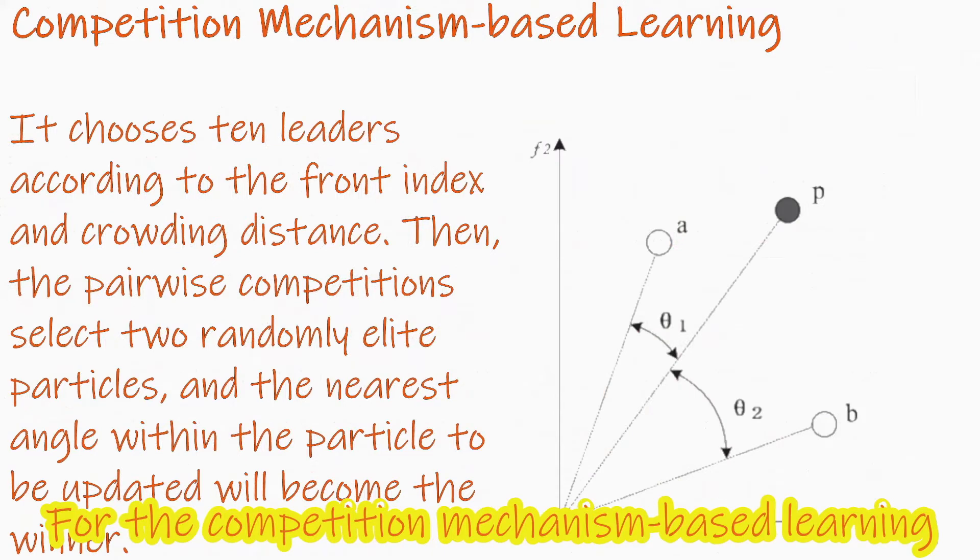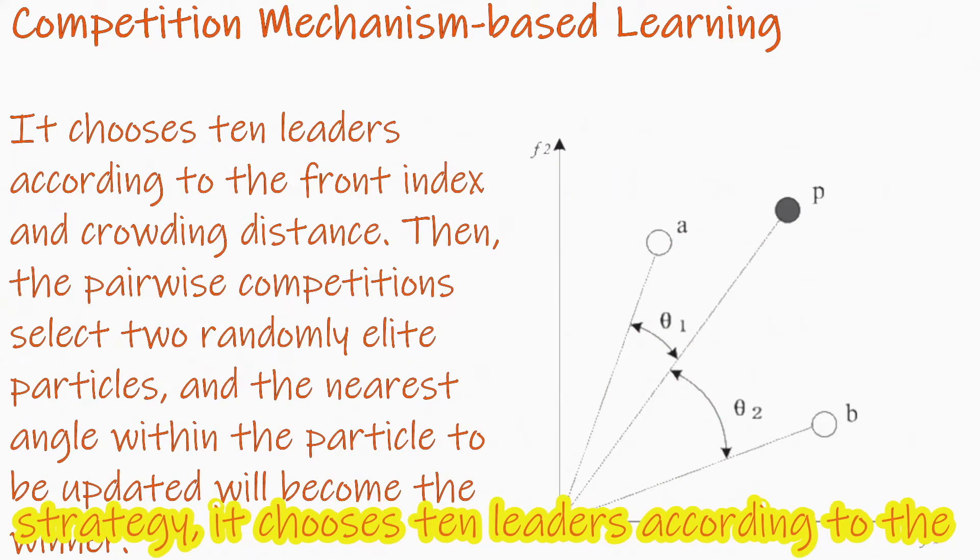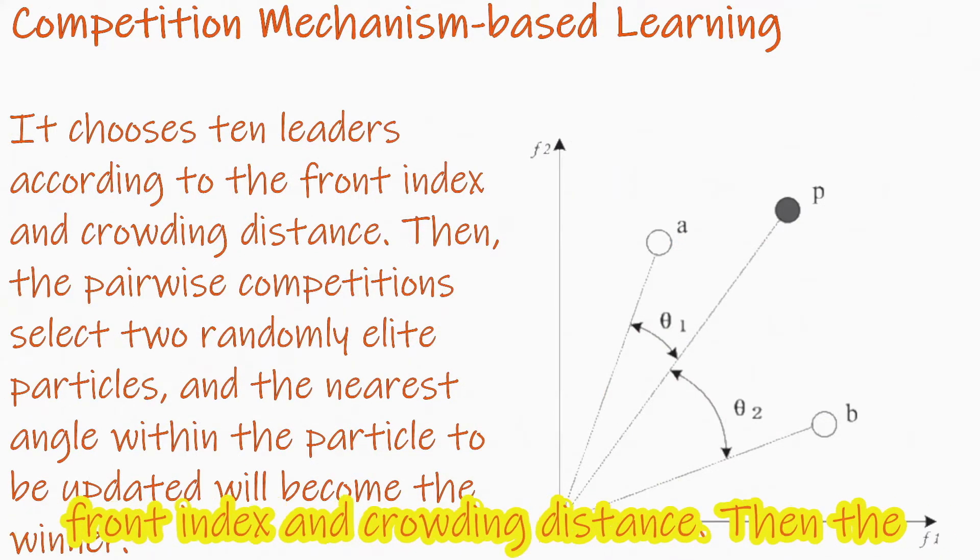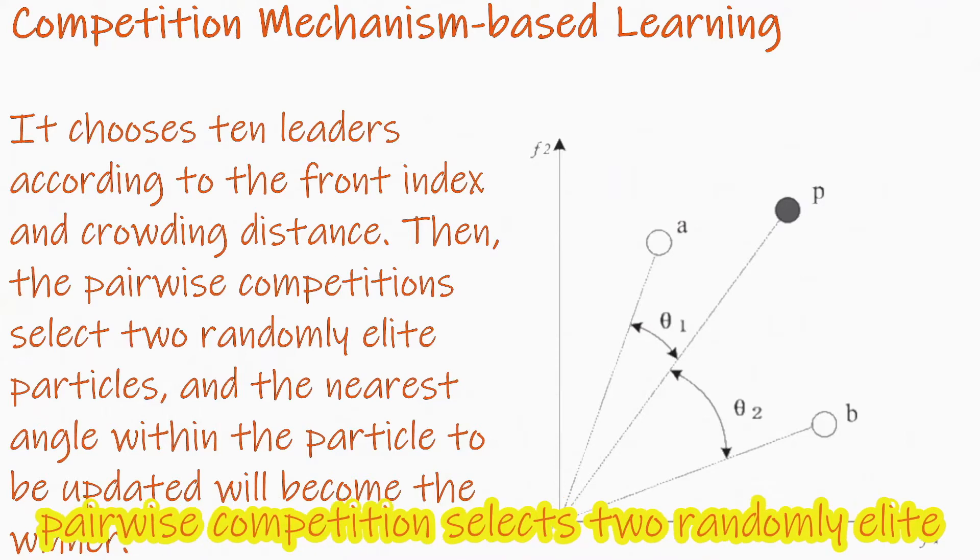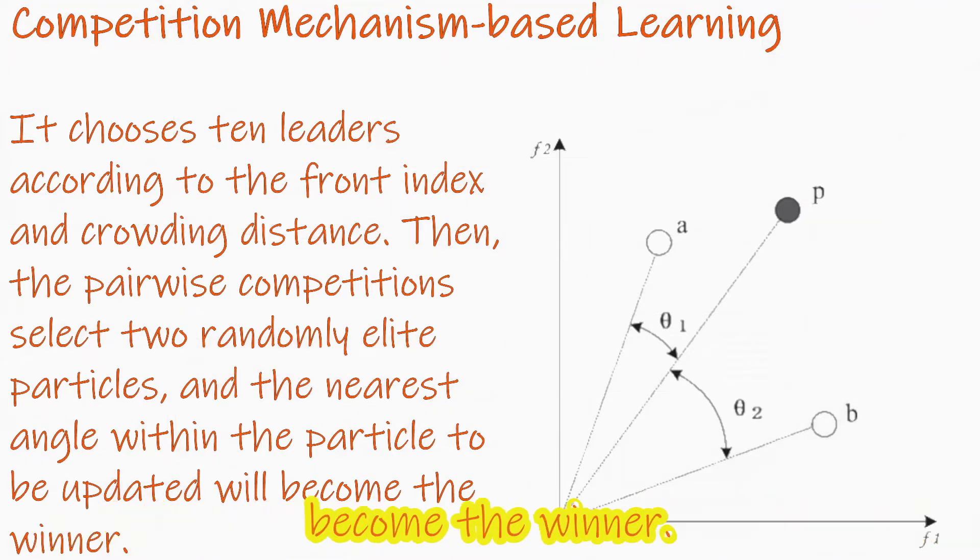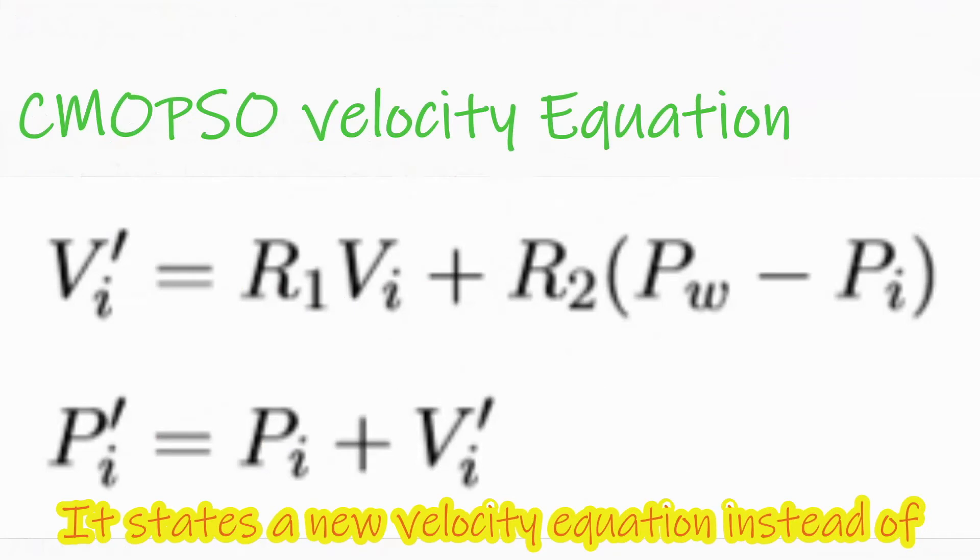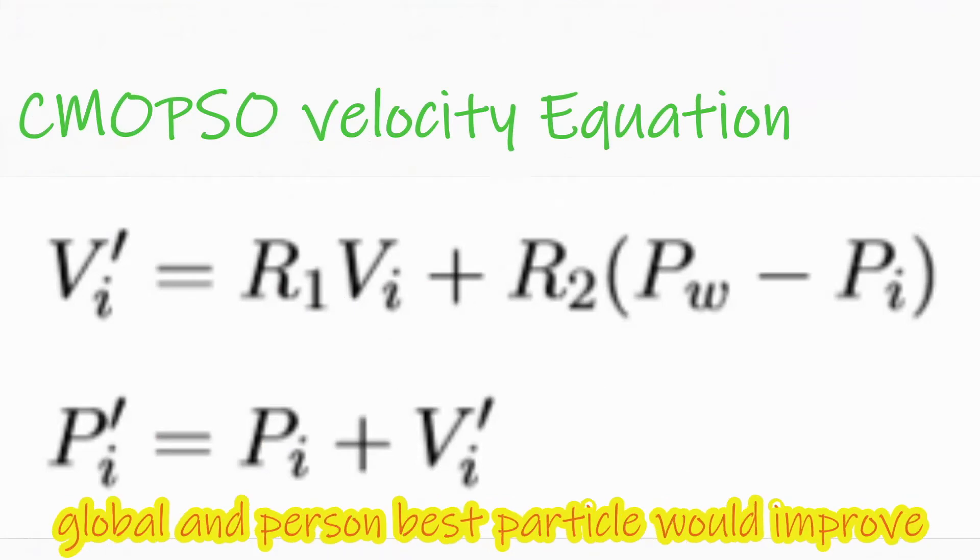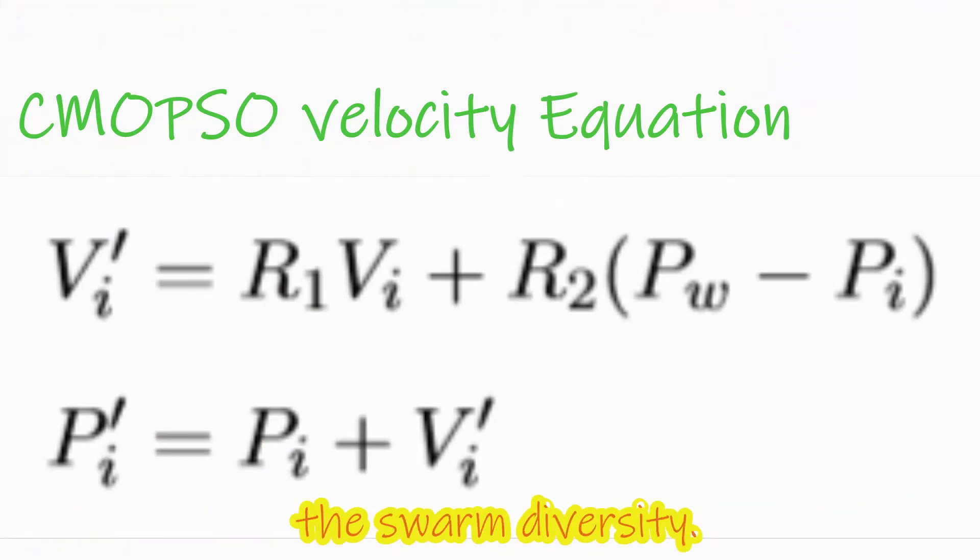For the competition mechanism-based learning strategy, it chooses ten leaders according to the front index and crowding distance. Then, the pairwise competition selects two randomly elite particles, and the nearest angle within the particle to be updated will become the winner. It stated the new velocity equation instead of global and personal best particles would improve swarm diversity.